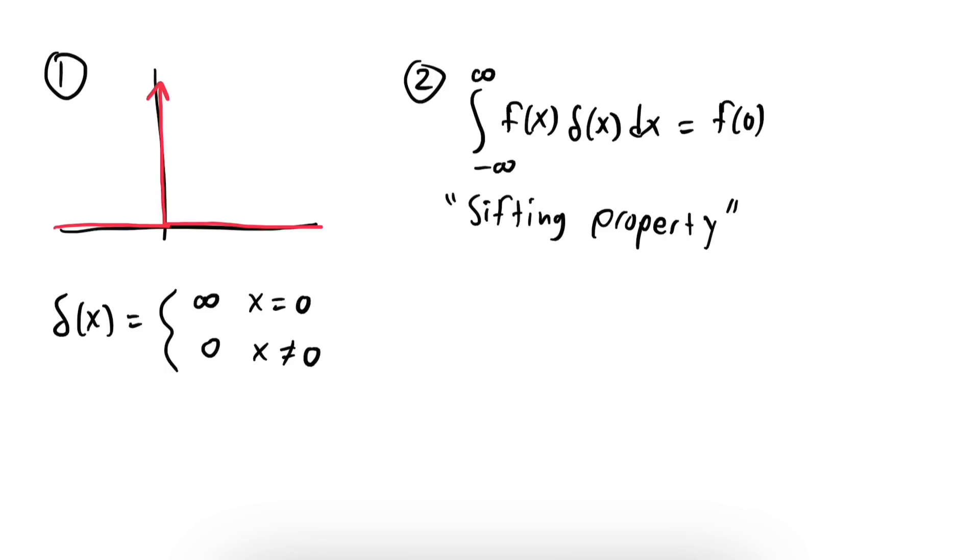Now, to be clear, the Dirac delta is not a function that maps real numbers to real numbers, because infinity is not a real number. So neither of these typical descriptions are mathematically precise, and things can go wrong pretty quickly.